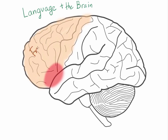So we have the frontal lobe up here, and then in red we have Broca's area. In general, this is on the left side of the brain. Broca's area is primarily responsible for language production and also grammar.